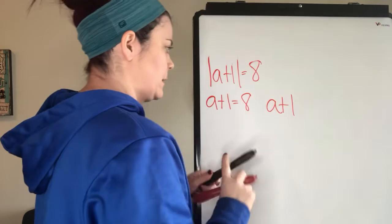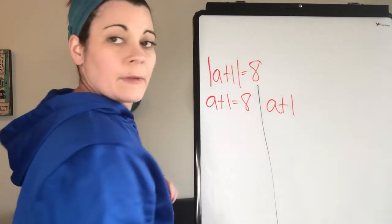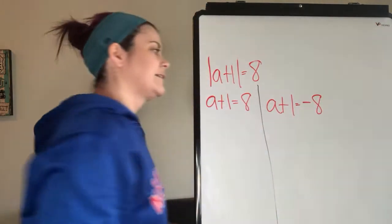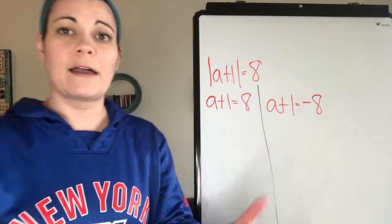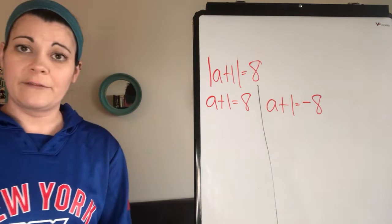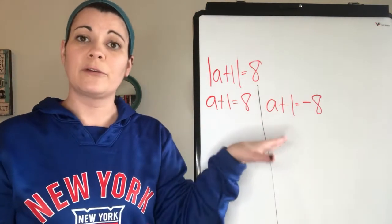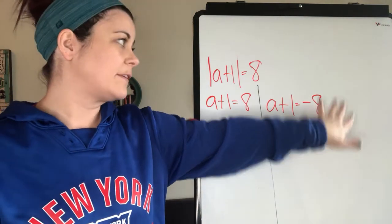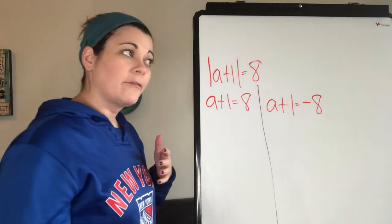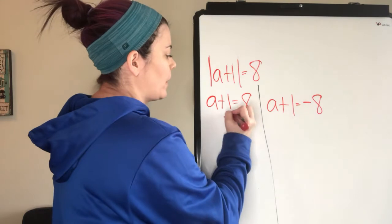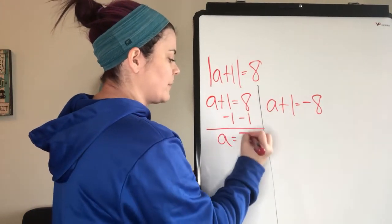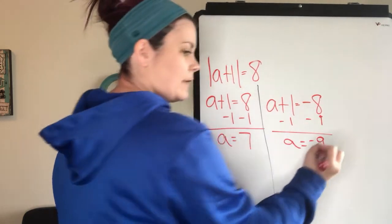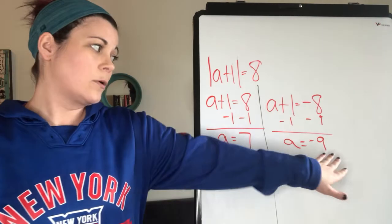The second equation: you drop the absolute value bars again, giving a + 1, but instead of writing just 8, you negate the other side. So it's a + 1 = negative 8. Those are the two equations you write when solving absolute value. Now solve them: subtracting 1 from both sides gives a = 7 for the first, and a = negative 9 for the second.